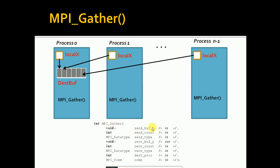The first parameter is the send buffer — in this case the address of local_x for each process. Then the send count: how many data elements we are going to send. Then the send type: the data type of the element being sent. The receive buffer is on process zero — that's the destination buffer. Then the receive count and the receive type. Since local_x is of integer type, we can use MPI_INT for both send and receive types.